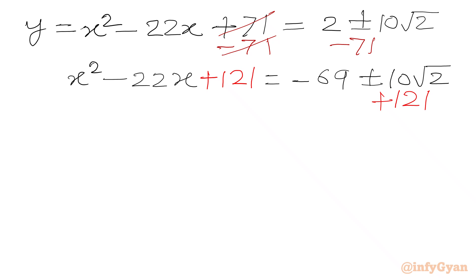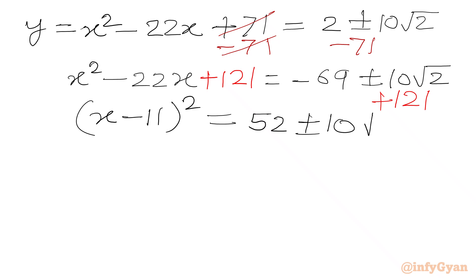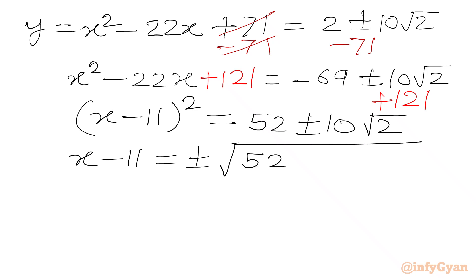The LHS becomes one perfect square once again. So I will write (x - 11)² and RHS would be 121 - 69 = 52, plus or minus 10√2. Now we will take the square root of both sides. So x - 11 = ±√(52 ± 10√2). Adding 11 to both sides, we get x = 11 ± √(52 ± 10√2).